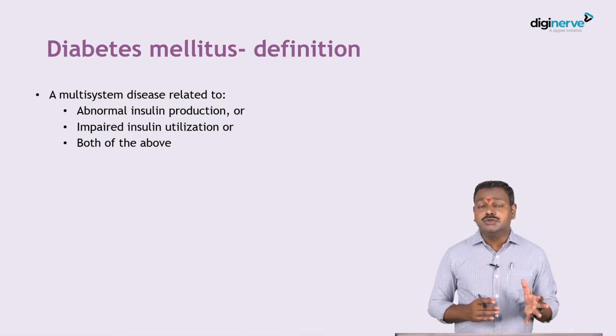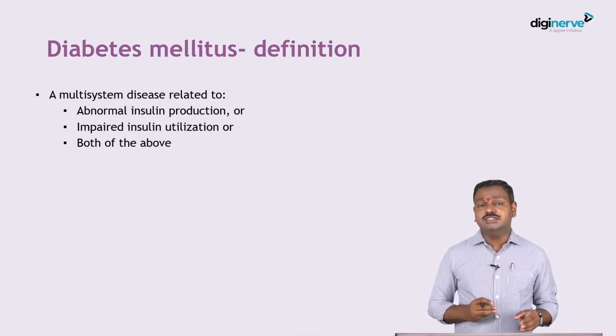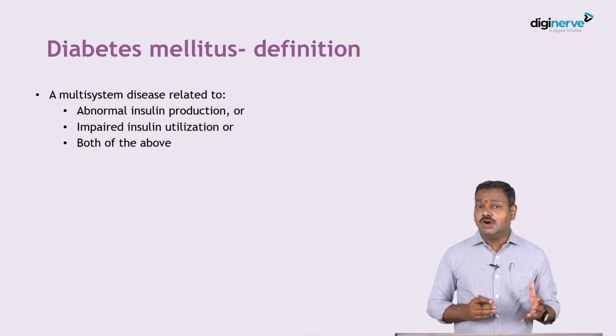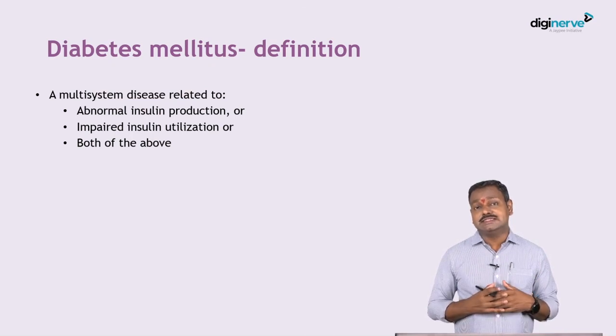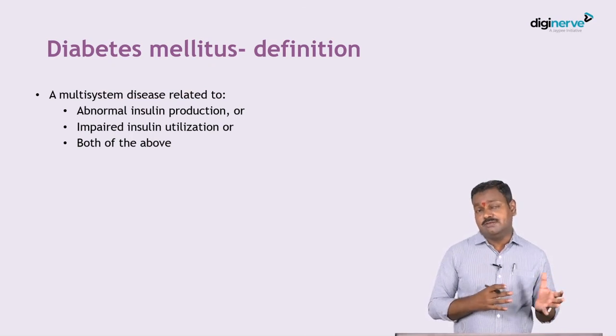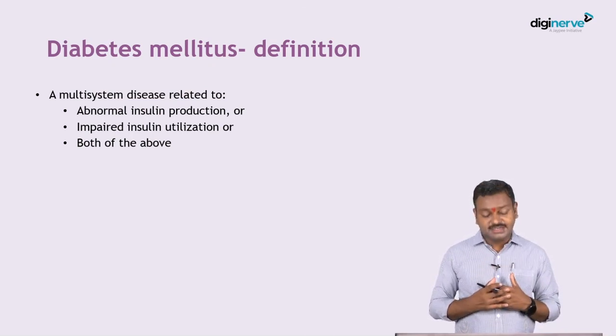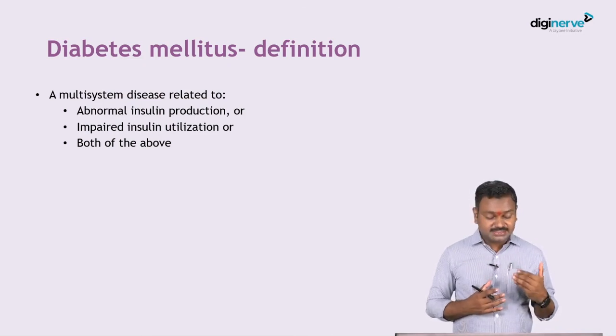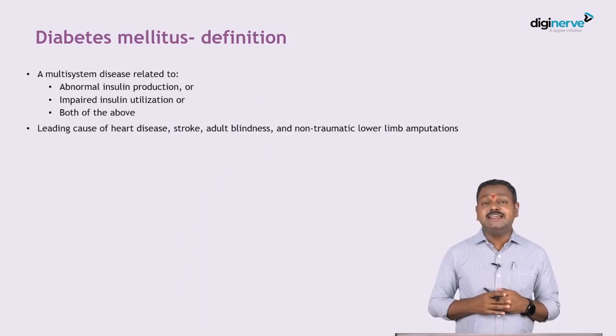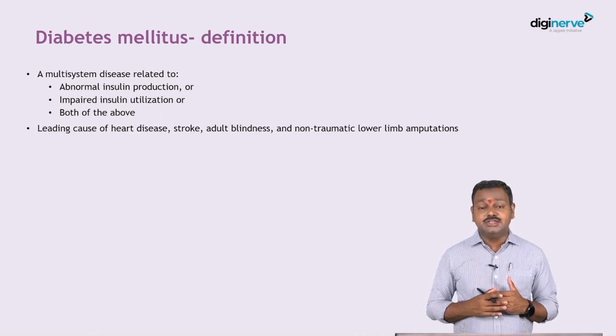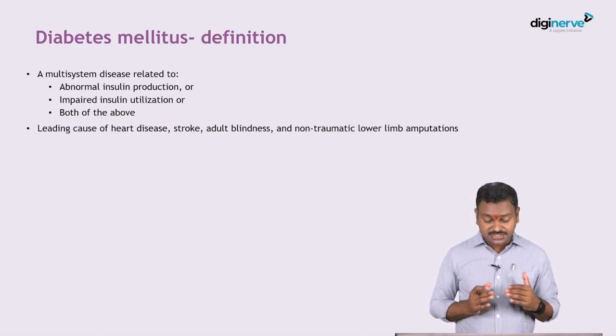There could be diminished production or impaired utilization — type 1 where insulin production is affected, or type 2 diabetes mellitus where it's peripheral resistance to insulin causing the manifestation. Diabetes is one of the leading causes of heart disease, stroke, adult blindness, and non-traumatic lower limb amputations.